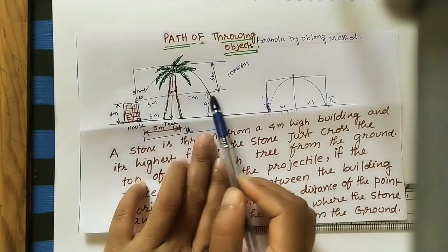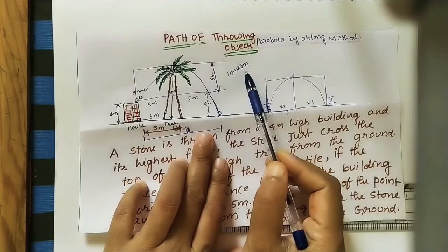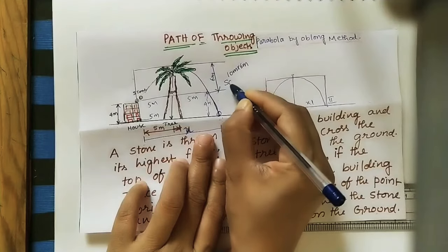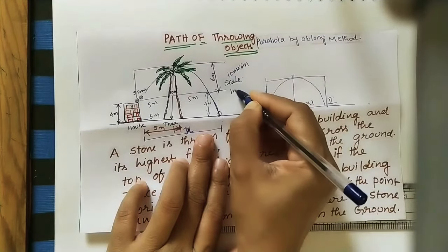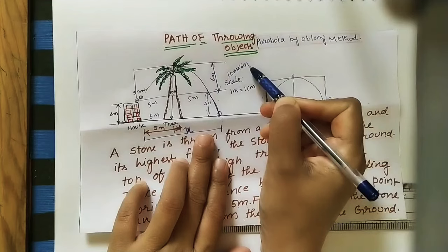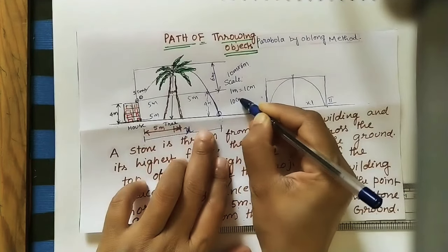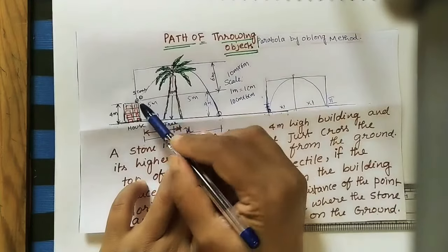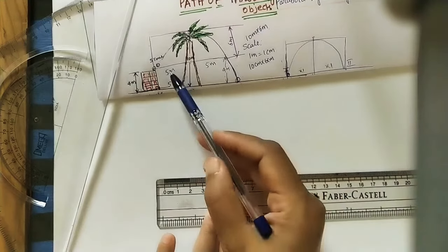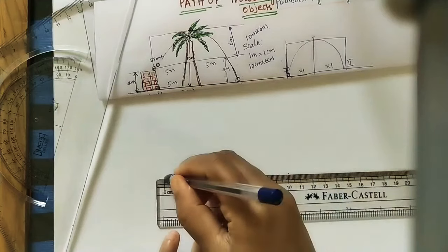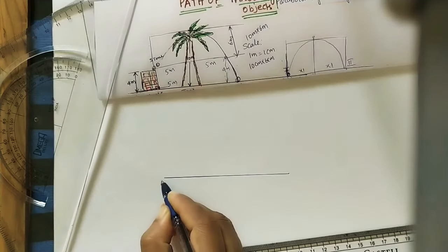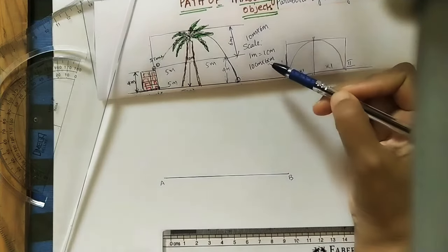Since units are in meters and we can't draw that on small paper, we take a scale: one meter equals one centimeter. So instead of ten meters we take ten centimeters, and instead of six meters we take six centimeters. We need to draw a rectangle of ten centimeters by six centimeters. First, draw a line of ten centimeters and mark the endpoints A and B.